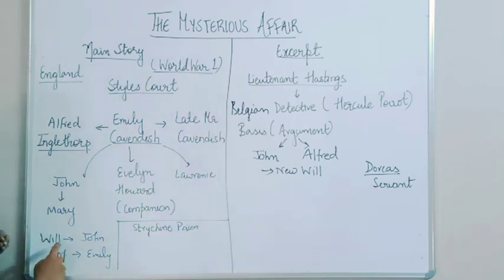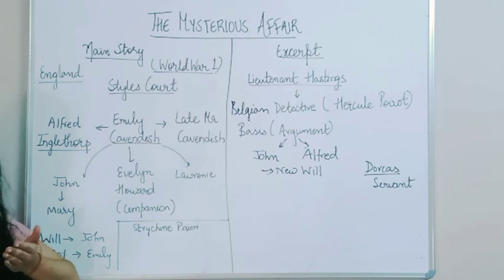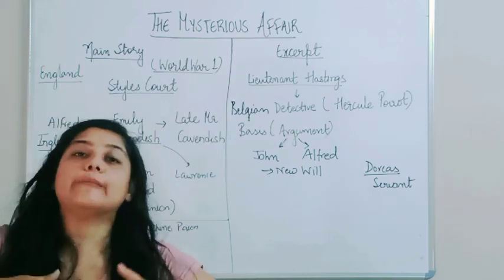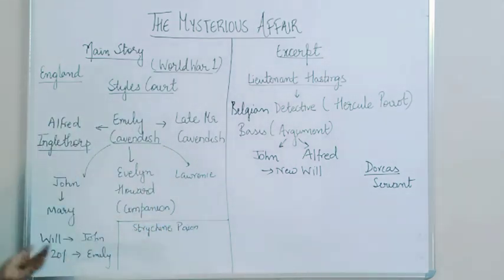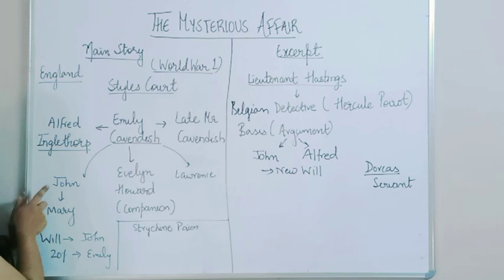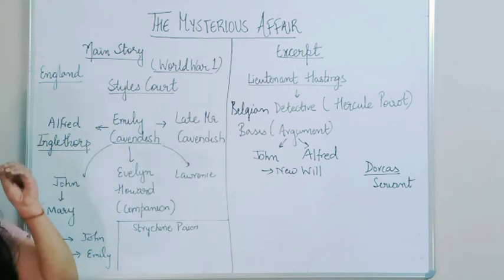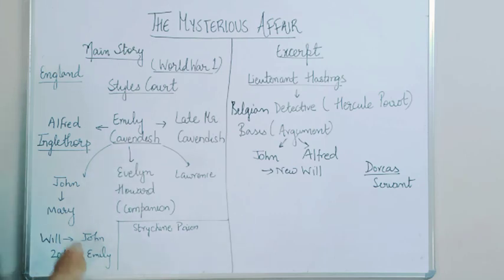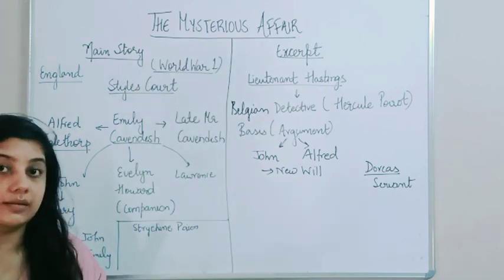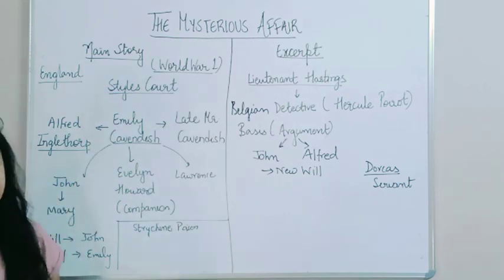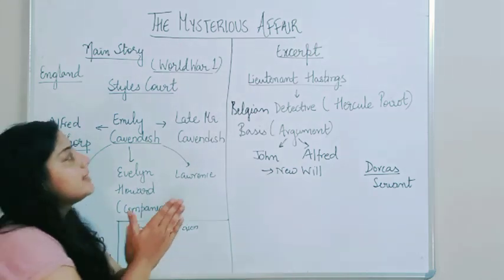There is one interesting thing to note. According to Emily's will - and you must have seen in movies when somebody dies they write a will specifying where the property goes - Emily had actually written a will stating that after her death all the property will go to John Cavendish. Eighty percent of the property will be given to John. So the biggest suspect here could be John, because of the property - he may have killed his own mother.